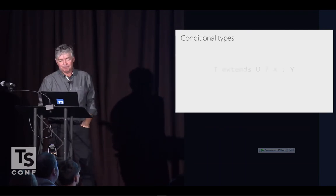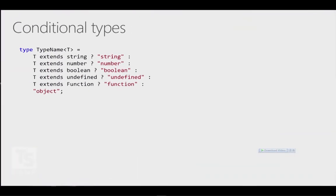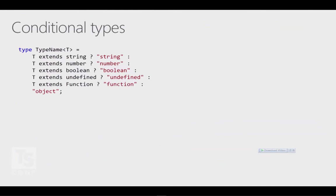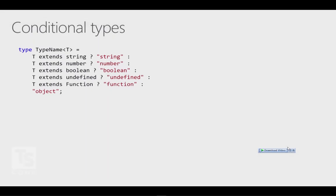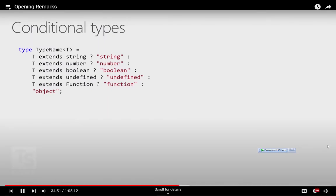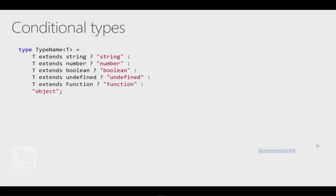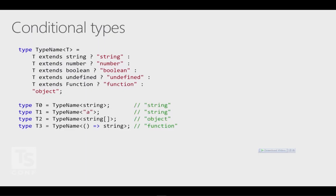Here's an example. Think of the typeof operator in JavaScript: today you get string, number, boolean, undefined, function, or object. But if we know something about x, we could know with more precision what string you'll get back. So imagine declaring a TypeName of T: if T is a string it maps to the string literal type 'string'; if it's a number it maps to 'number'; and so on. TypeName of string gives you 'string', TypeName of a string array gives you 'object', TypeName of a function gives you 'function'.